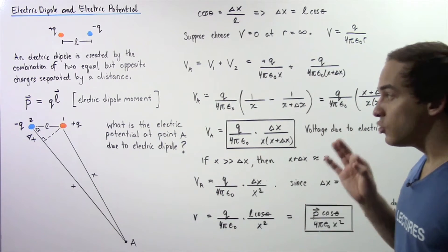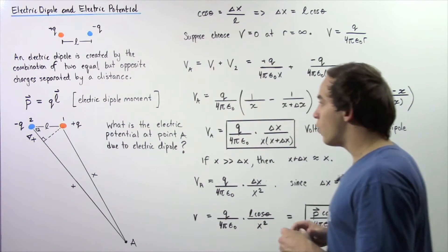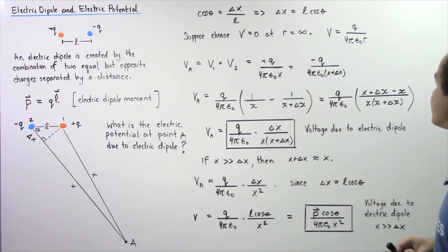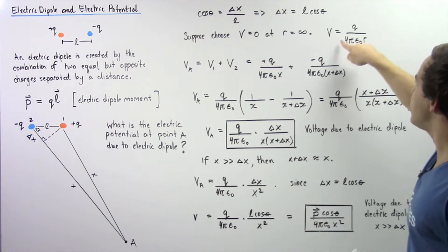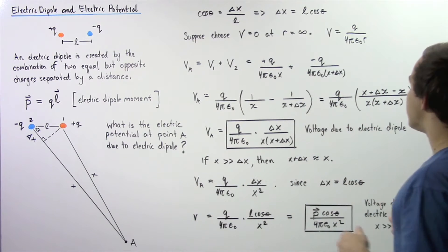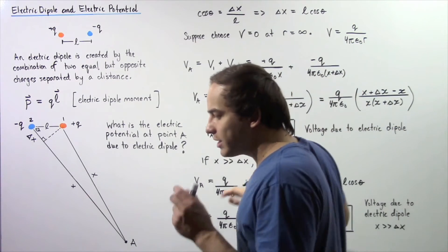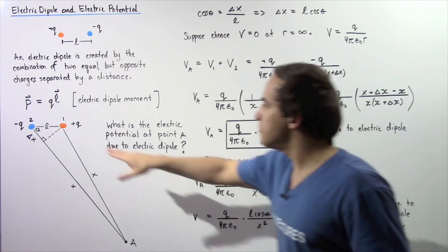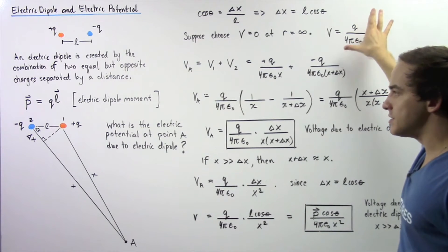First, let's recall the formula for the voltage due to a stationary point charge Q: V = Q / (4πε₀R), where R is the distance between the point and the point charge. We can use this equation as long as we define where voltage is zero — we assume the voltage is zero at an infinite distance from the two point charges.